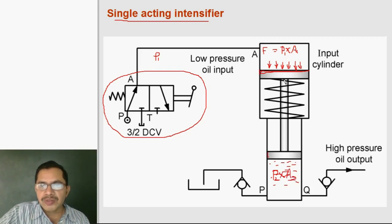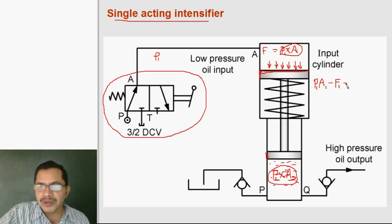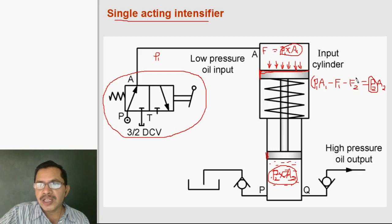If packing frictions of the two pistons are neglected, then P1·A1 equals P2·A2, so P2 equals (A1/A2)·P1. If we consider packing friction, then P1·A1 minus F1 (packing friction in the big cylinder) minus F2 (packing friction in the small cylinder) equals P2·A2. So P2 equals (P1·A1 − F1 − F2) divided by A2.